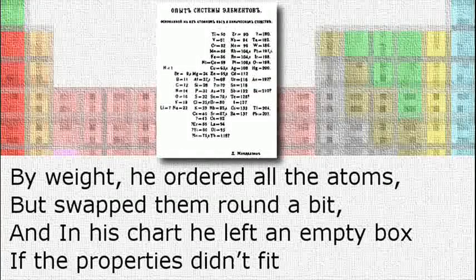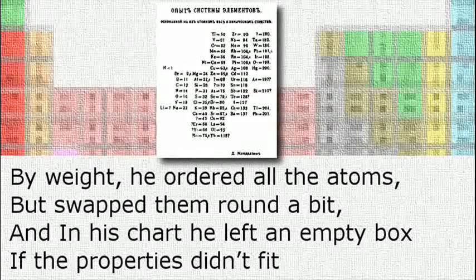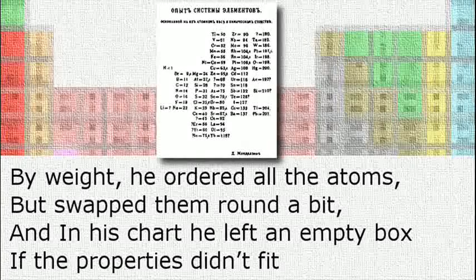By weight he ordered all the atoms, but swapped them round a bit, and in his chart he left an empty box if the properties didn't fit.